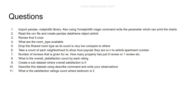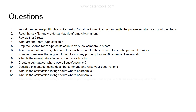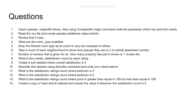Question ten: find the satisfaction ratings where the number of bedrooms is three. Question eleven: find the satisfaction ratings count where bedrooms equals two. Question twelve: find the satisfaction ratings count where price is greater than 150 but less than 180 — adding a range-based filter to explore what satisfaction ratings exist within that price band.